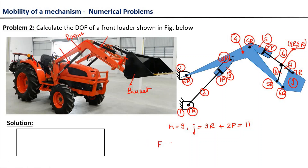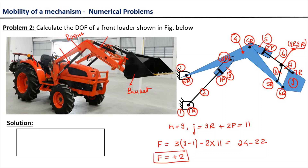The next step is to apply the Kutzbach criteria to calculate the degree of freedom. The Kutzbach criteria gives: f = 3(n − 1) − 2j, where n = 9 and j = 11. This becomes 3 × 8 − 2 × 11 = 24 − 22 = 2. So the degree of freedom of the excavator mechanism is equal to 2, meaning at least two input motions are required to define the motion of the output link. With this, I would like to stop this session here and hope to see you in the next session. Thank you.